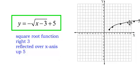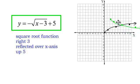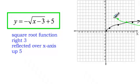Here is my square root function. I take this function: it shifts right 3, it is reflected over the x-axis, and it shifts up 5 places. So we have moved the starting point from (0, 0) to (3, 5).